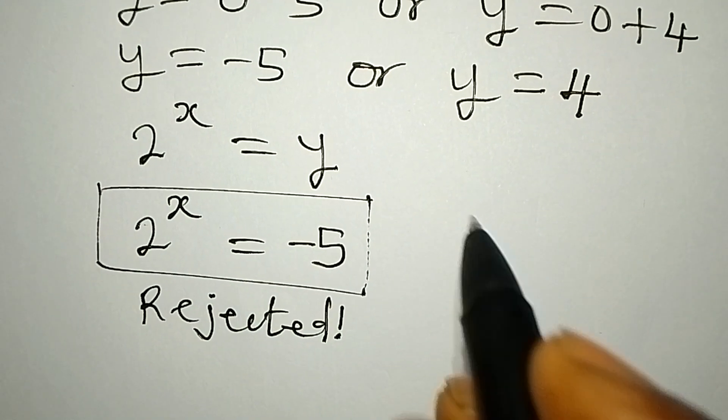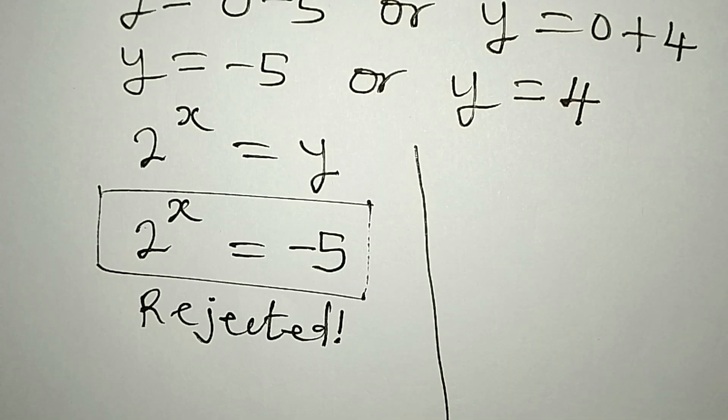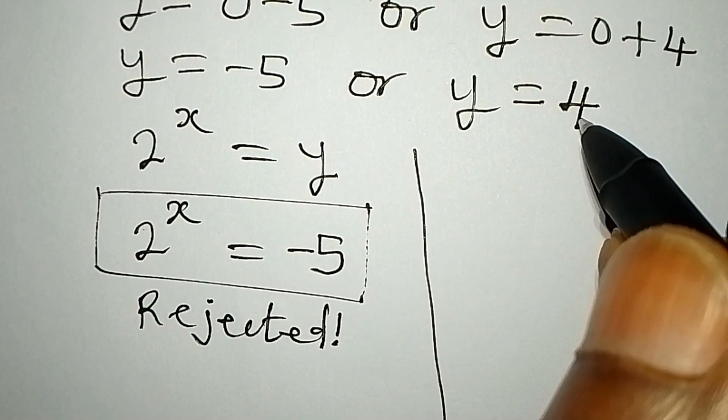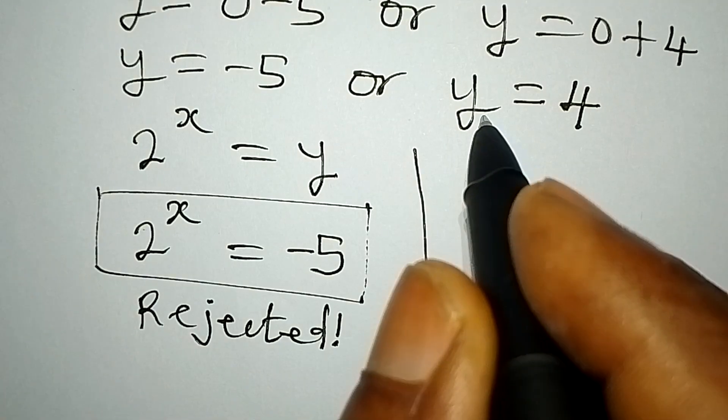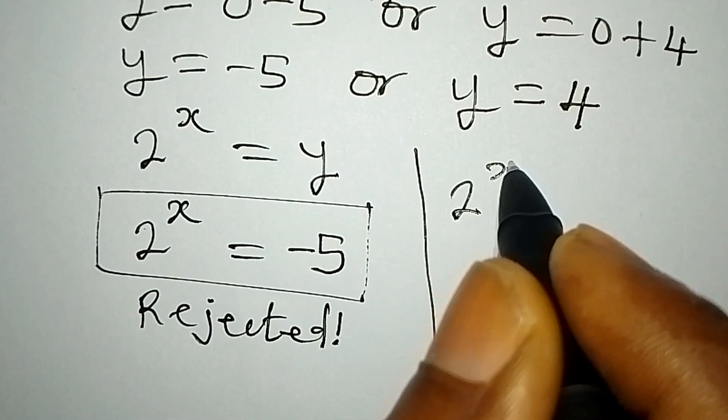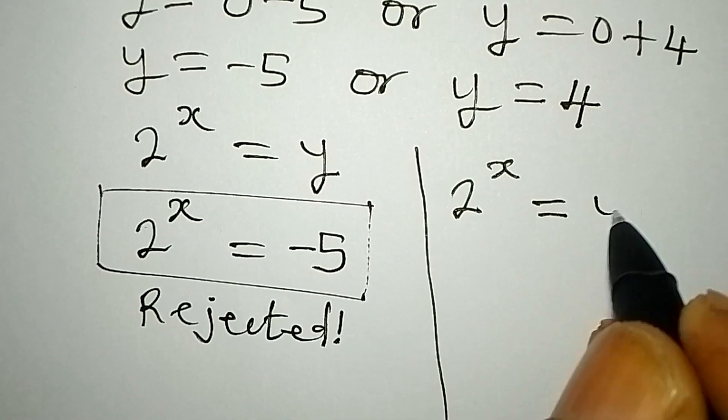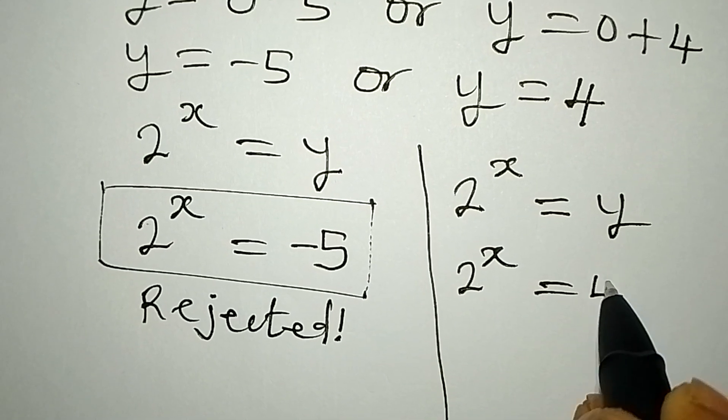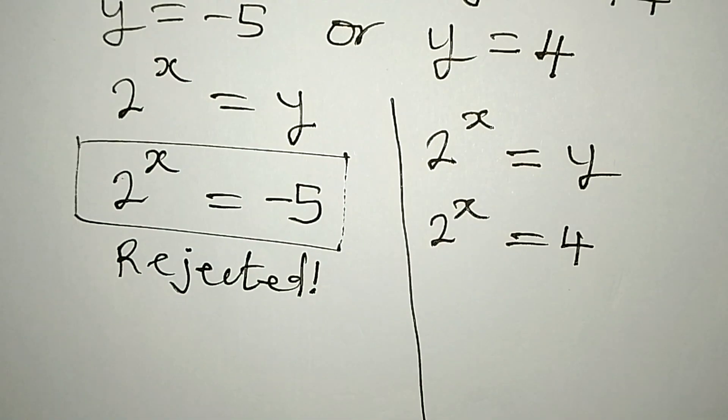So we will now reject what we have here. This has to be rejected, so that will now go straight to our second value of y. This also means that 2 to the power of x is now equal to y, and that 2 to the power of x is equal to 4, because y is 4.